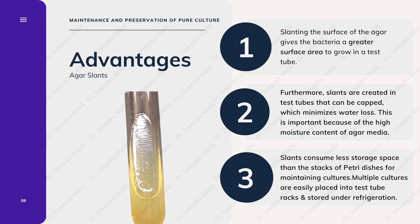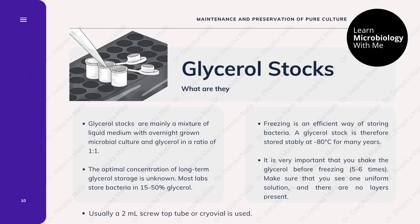The advantage of using agar slants as a preservation method is that slanting the surface gives bacteria a greater surface area to grow in a test tube. Furthermore, slants are created in test tubes that can be capped, which minimizes water loss — very important due to the high moisture content of agar media. Agar slants also consume less storage space than stacks of petri dishes; multiple cultures are easily placed into test tube racks and stored under refrigeration.